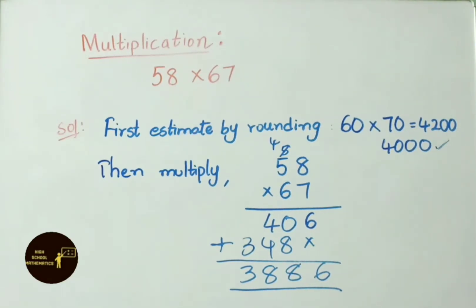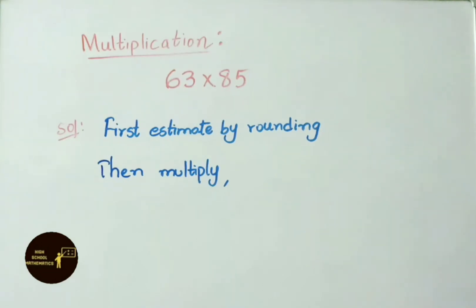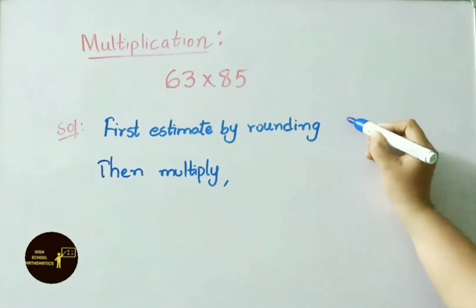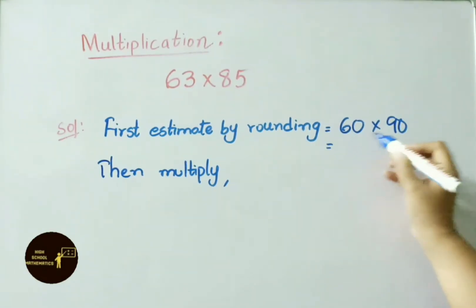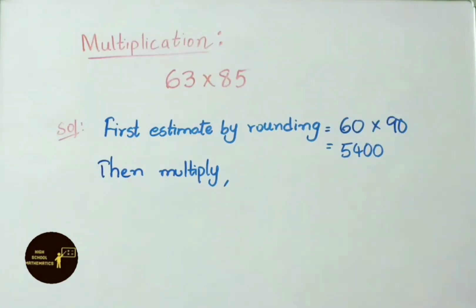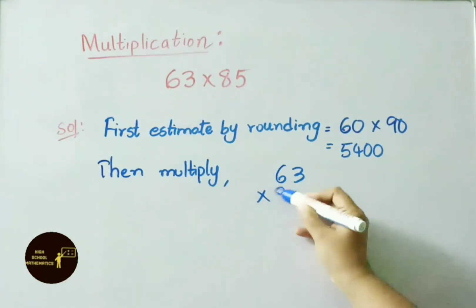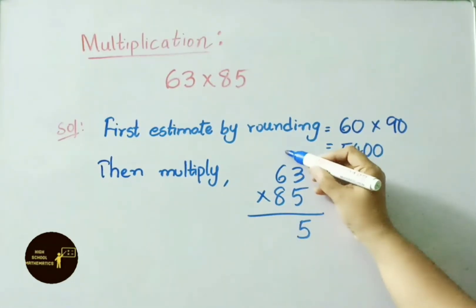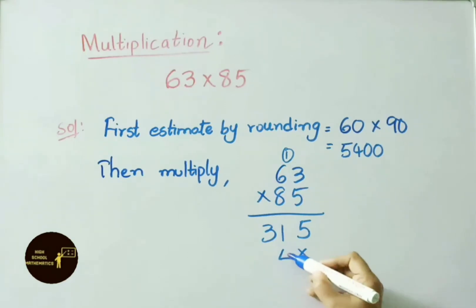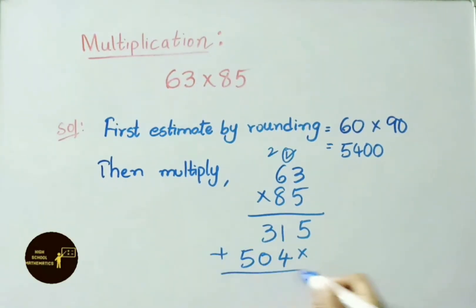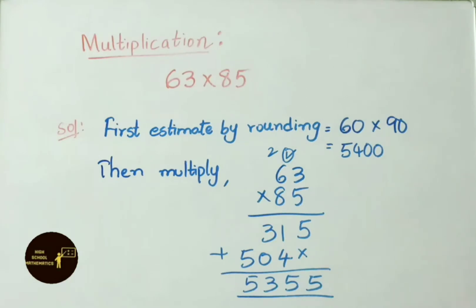Another multiplication example: 63 into 85. Estimate by rounding: 63 rounds to 60, 85 rounds to 90. 60 into 90 is 5,400. Actual multiplication: 5 threes are 15, write 5 carry 1; 5 sixes are 30 plus 1 is 31; 8 threes are 24, carry 2; 8 sixes are 48 plus 2 is 50. Adding gives actual answer 5,355, and our estimation value is 5,400.